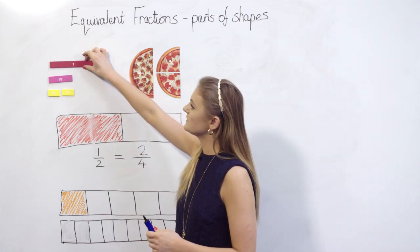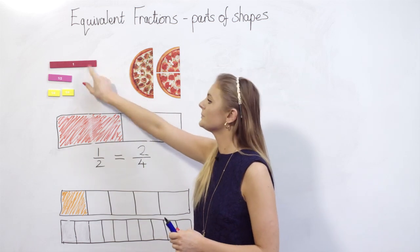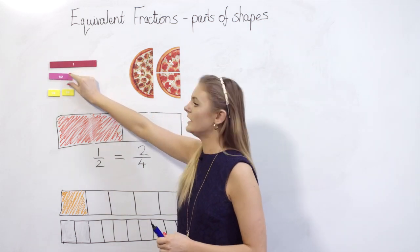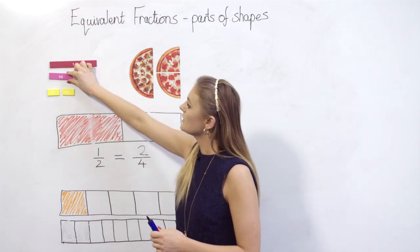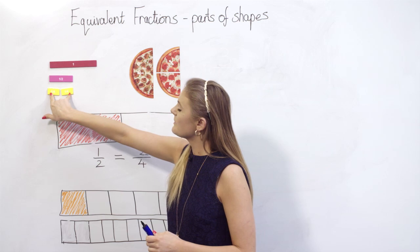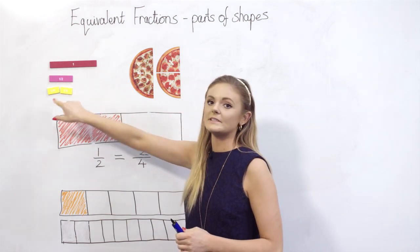We can look at this with fraction walls and strips like we have here. So I have the one here just to show us the whole, and then I have one half and I have two quarters. Now we can see quite visually that we've got the same amount, so one half is equal to two quarters.